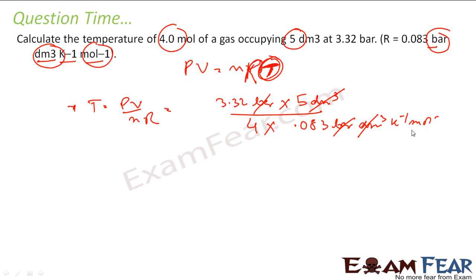Dm cube, dm cube cancelled. And instead of 4 mole, mole, mole gets cancelled. So what I am left with is 50 K, 50 Kelvin. The temperature is 50 Kelvin.